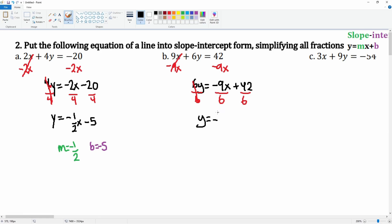3 goes into both terms, so this is negative 3 over 2x plus 42 divided by 6 is 7. The slope here is equal to negative 3 over 2, and the y-intercept here is equal to 7.